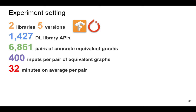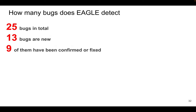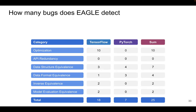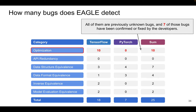Here are our experiment settings. We evaluate EGLE on five versions of two of the most popular deep learning libraries, TensorFlow and PyTorch. We test our 16 equivalence rules on 1,427 deep learning library APIs in total, generating 6,861 pairs of concrete equivalent graphs and 400 inputs per pair. On average, it takes 32 minutes to execute one pair of equivalent graphs. EGLE detects 25 bugs in total; among those, 13 bugs are new, and 9 of the 13 new bugs have been confirmed or fixed by developers. The optimization category is the one for which EGLE finds the most bugs.